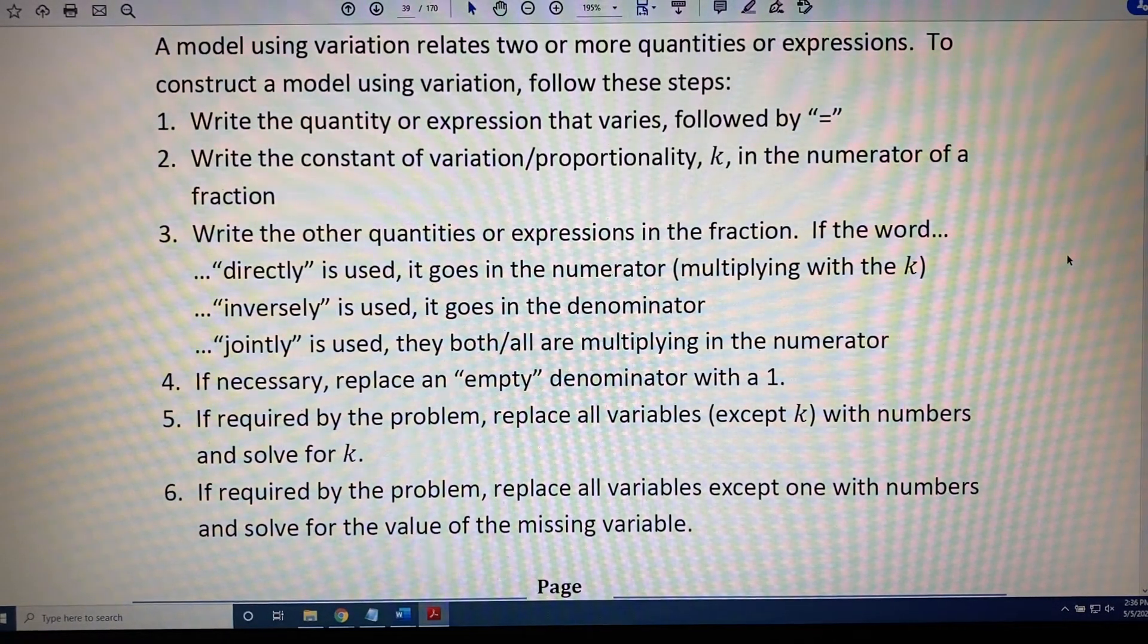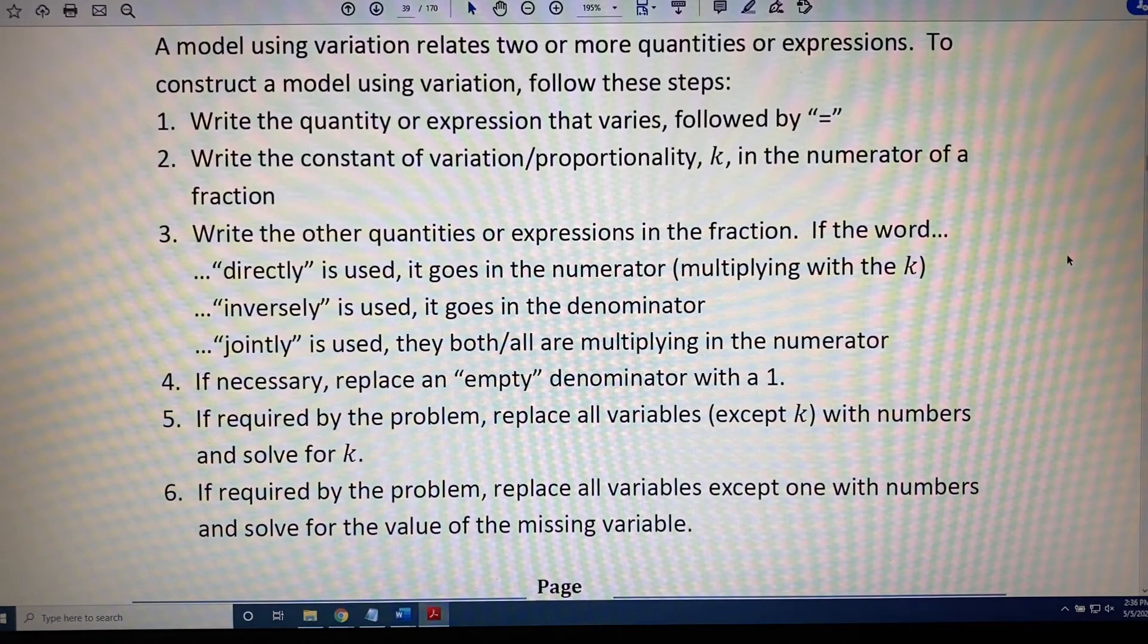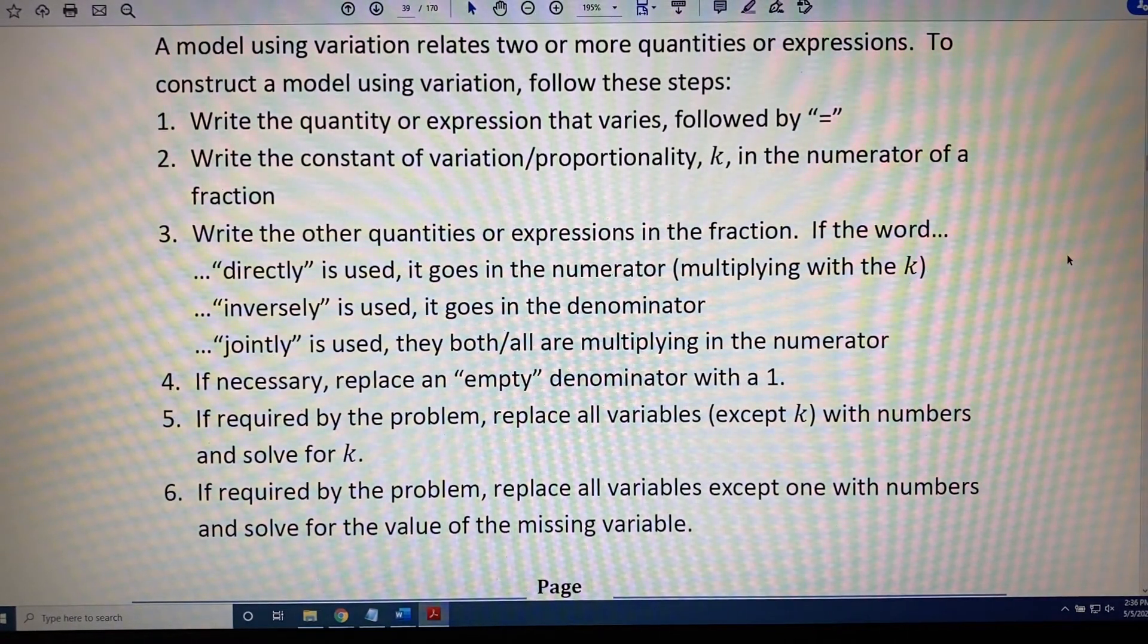If the word jointly is used, then it will be followed by two or more quantities, and they both or all are going to go in the numerator where they are multiplying k. Step four, if necessary, replace an empty denominator with a one.